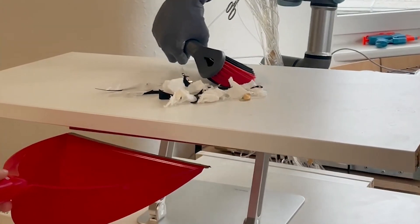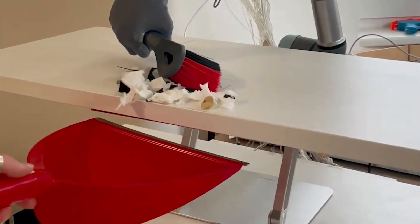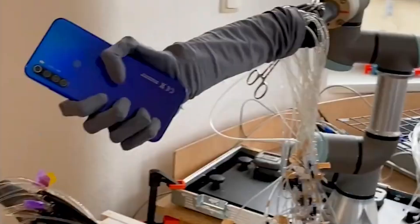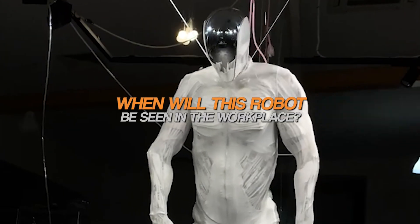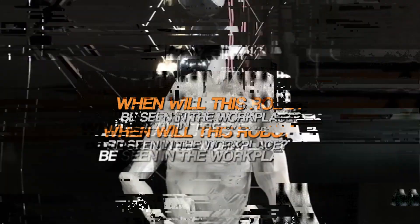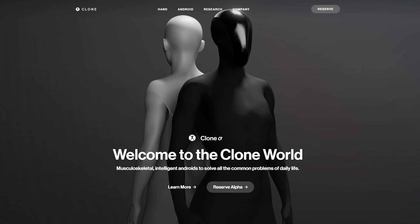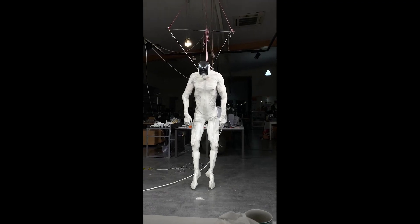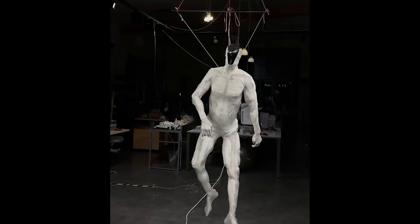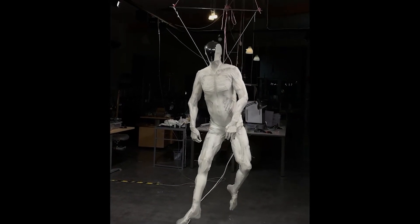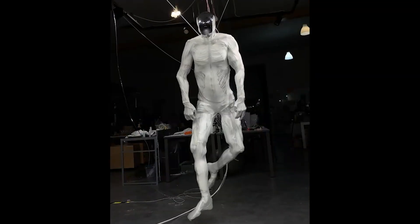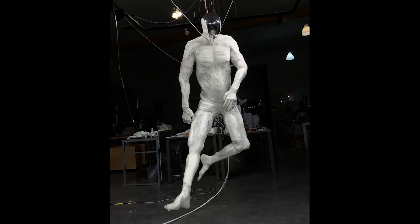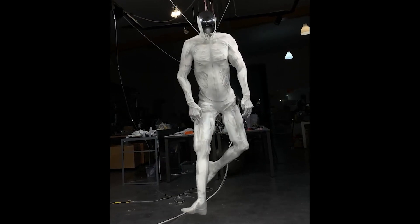The combination of these materials and technologies allows the Protoclone to move with a high degree of agility and responsiveness. It can perform tasks that were once considered too complex for robots, such as picking up objects, walking, or even interacting with its environment in a way that seems natural. The release of the Protoclone has sparked mixed reactions from the public. While technologically impressive, the twitching movements have been described as unsettling.